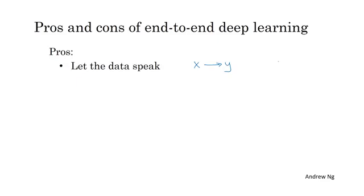So for example, in the case of speech recognition, earlier speech systems had this notion of a phoneme which was a basic unit of sound like k, a, and t for the word cat. And I think that phonemes are an artifact created by human linguists. I actually think that phonemes are a fantasy of linguists that are a reasonable description of language, but it's not obvious that you want to force your learning algorithm to think in phonemes. And if you let your learning algorithm learn whatever representation it wants to learn rather than forcing your learning algorithm to use phonemes as a representation, then its overall performance might end up being better.